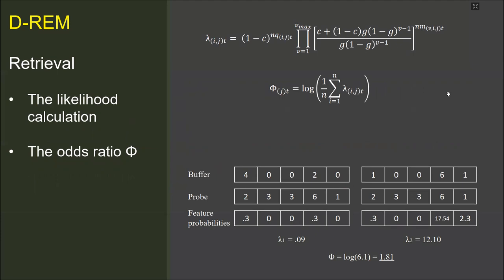When the probe is compared to each memory trace, all the item features in the probe are compared to the corresponding active features of the memory traces. The likelihood ratio of a memory trace is the compound probabilities of the item feature likelihood. The odds ratio of the probe is the natural logarithm of the average likelihood. It is calculated in each time step with the currently active item features in the buffer.